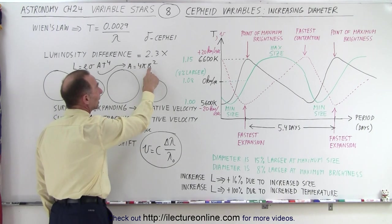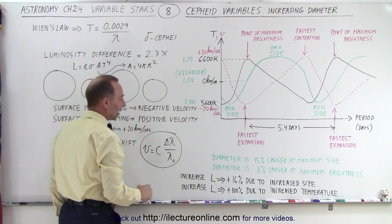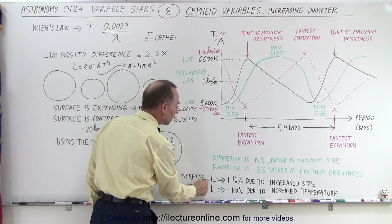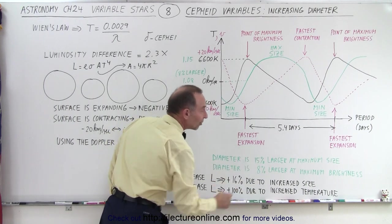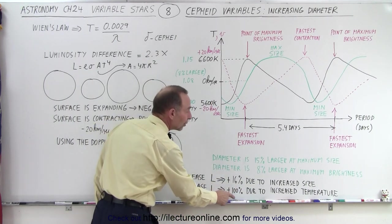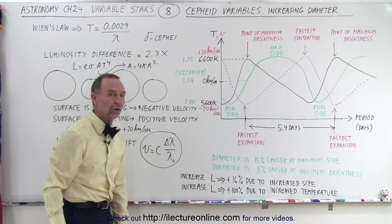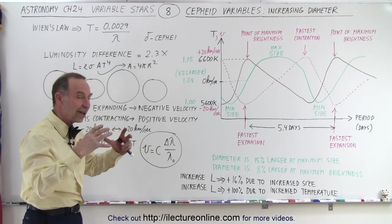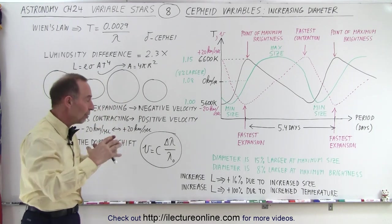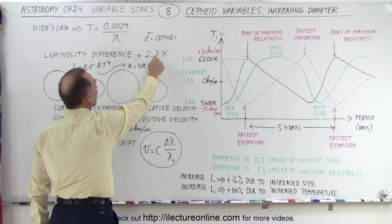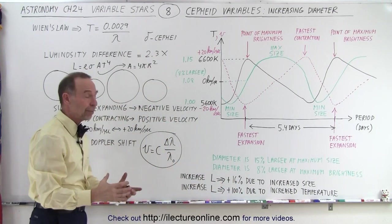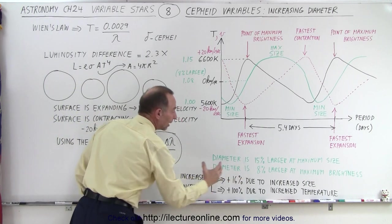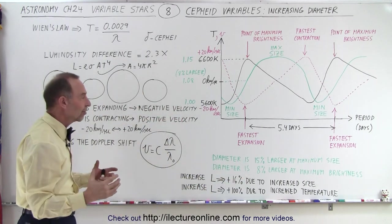So if the radius increases by 8% and we square that, that means that the increase in luminosity is 16% due to the increased size and a hundred percent increase due to the increase in the temperature. So both the increased size and the increased temperature both attributed to the increase in luminosity. But the majority is due to the increase in temperature and a smaller amount is due to the increase in size.